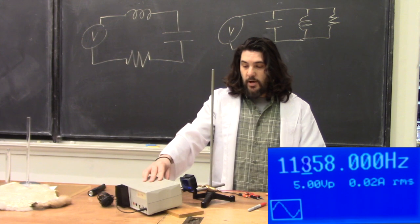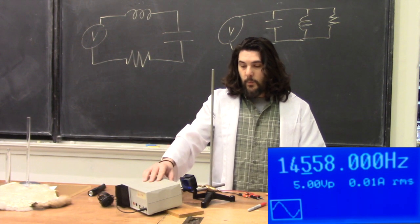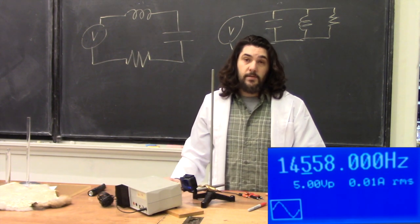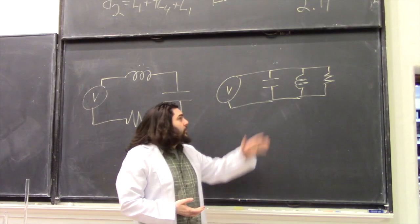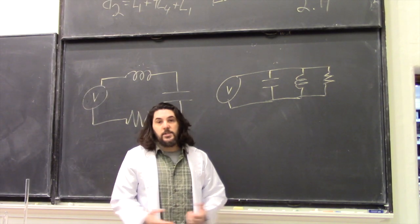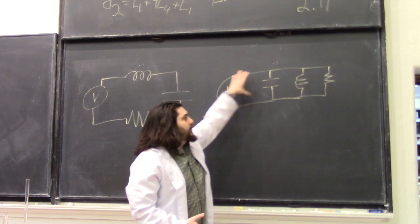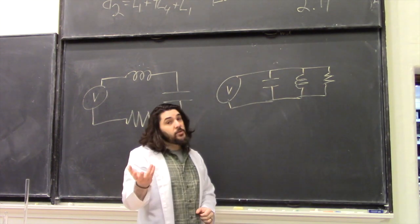And then, as we draw further away, we once again go down to zero amps. What if instead we set it up as a parallel circuit? Well, there's no point in measuring the voltage across each of the elements, because they're all going to be the same as the input voltage. But we can measure the current again.